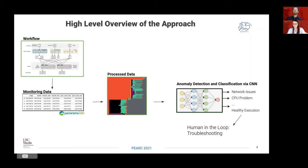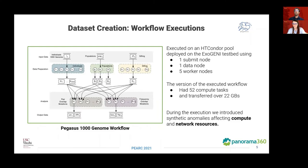To generate workflow traces for this study, we executed a version of the Pegasus 1000 Genome workflow on an HTCondor pool deployed on the Chameleon testbed. This deployment had seven nodes in total: a submit node, a data node, and five worker nodes. This Pegasus workflow processes data from the 1000 Genome project, and the version we executed had 52 compute tasks and transferred over 22 gigabytes of data. During our runs, we introduced synthetic anomalies to affect the compute and network resources.